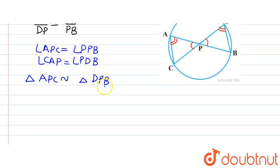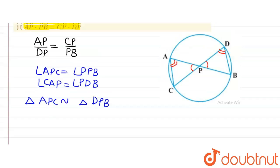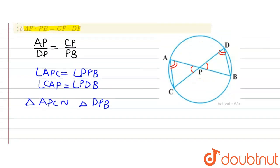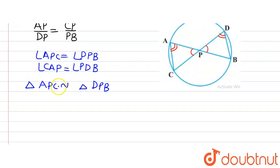Now here the sequence, that is APC and DPB, is mandatory that they should be correct. The sequence should be such that because we know angle A is equal to angle D, so we have put A first and D first here.